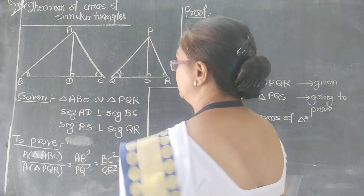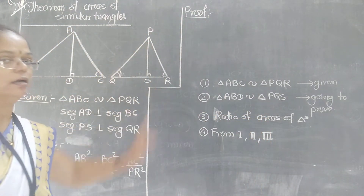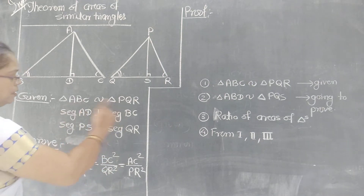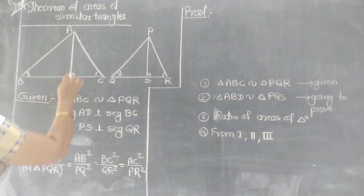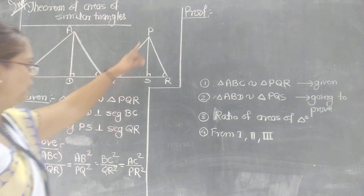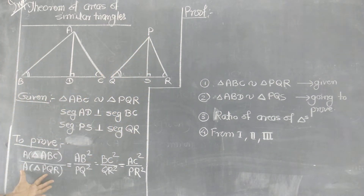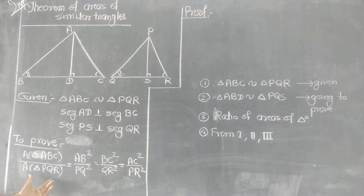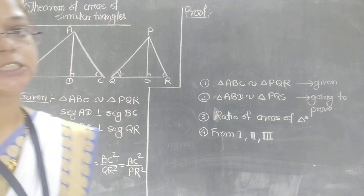Two triangles are given — triangle ABC and triangle PQR — and they are similar. Additionally, AD is perpendicular to BC, and segment PS is perpendicular to segment QR. We are going to prove that area of triangle ABC upon area of triangle PQR equals AB²/PQ² = BC²/QR² = AC²/PR².